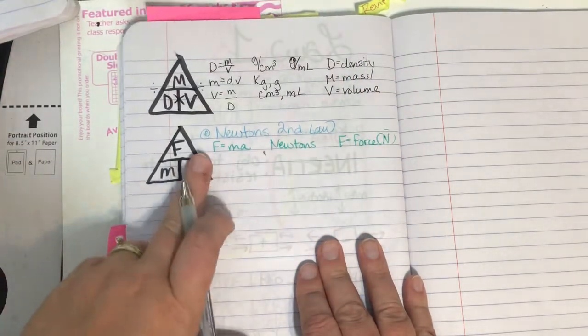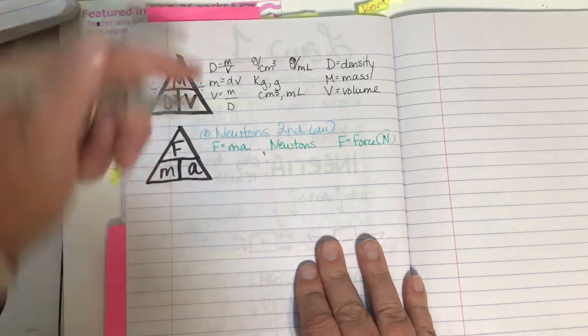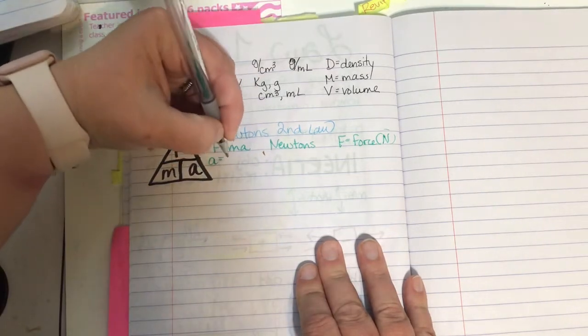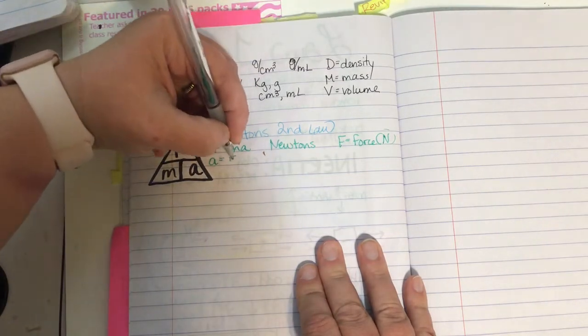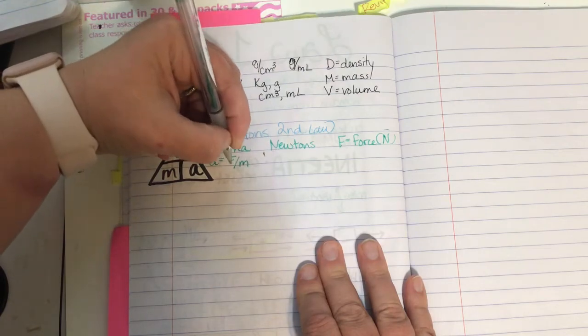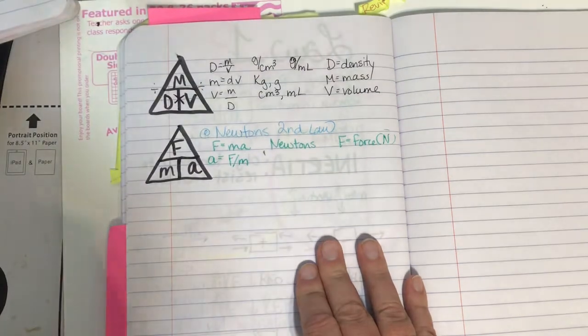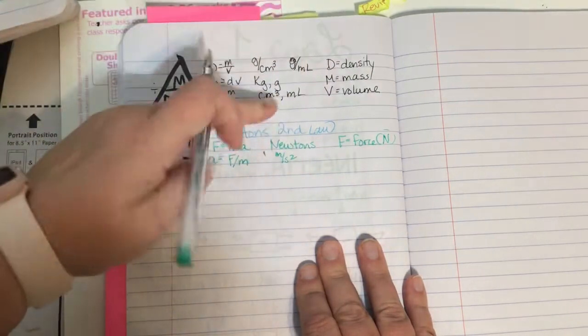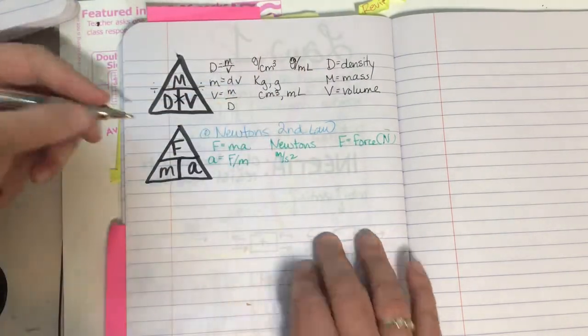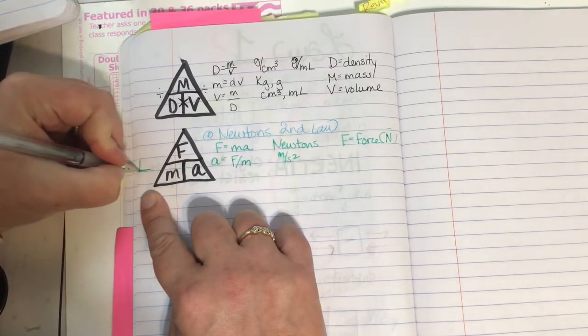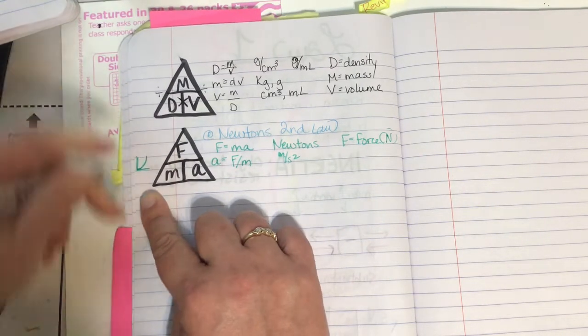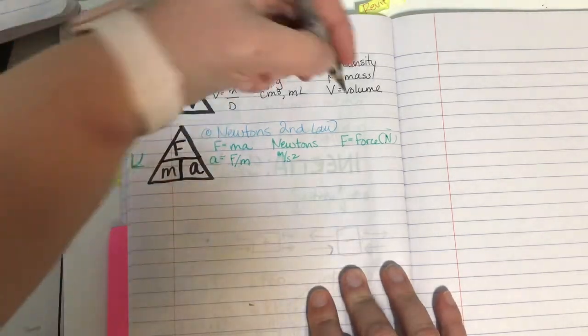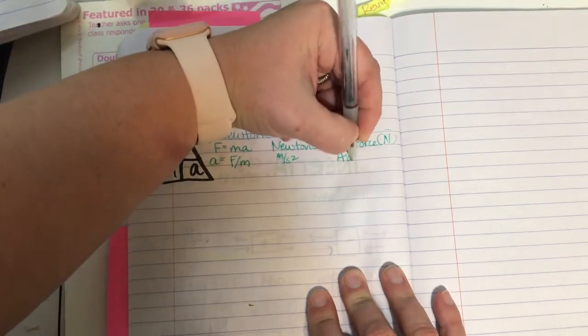If I'm solving for acceleration, acceleration is force divided by mass. Acceleration is measured in meters per second squared. Guys, you're going to learn that when I graph acceleration, the graph for that looks like a parabola. And the A here stands for acceleration.